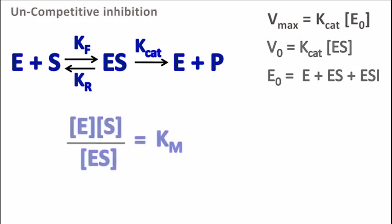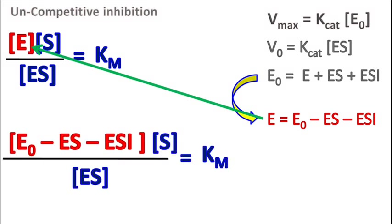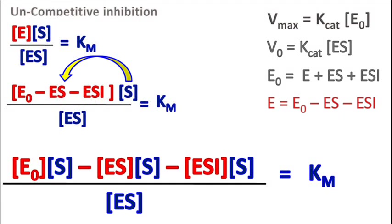Now E into S upon ES is equal to Km. The E in the above equation can be substituted as E is equal to E0 minus ES minus ESI. Multiplying S on the left-hand side, we get E0 into S minus ES into S minus ESI into S upon ES is equal to Km.